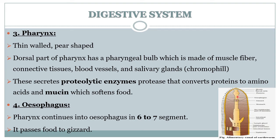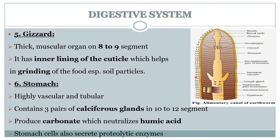The pharynx leads into a narrow tube — the esophagus — which is located from the sixth to seventh segments and passes food into the gizzard. The gizzard is an oval, thick muscular organ which runs from the eighth to ninth segments. It has circular muscles and an inner lining of cuticle which help in grinding the food. The gizzard then leads into the stomach.